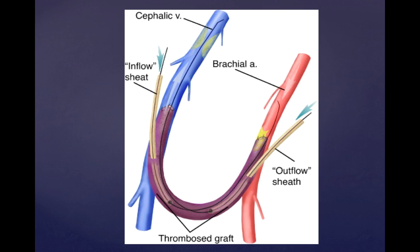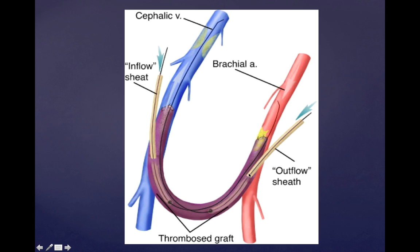Moving on to the anatomy: this diagram shows the cephalic vein with stenosis illustrated by the yellow material shown here. We also have two types of sheaths. The outflow sheath, on the right, is placed near the inflow — because we want it pointing toward the outflow. This might be counterintuitive, but remember: the sheath is named for the area you want to treat. So the inflow sheath points toward the inflow but is inserted adjacent to the outflow tract. The loop illustrated in purple represents the graft connecting both the arterial and venous systems — in this case, a thrombosed graft that we are going to treat.